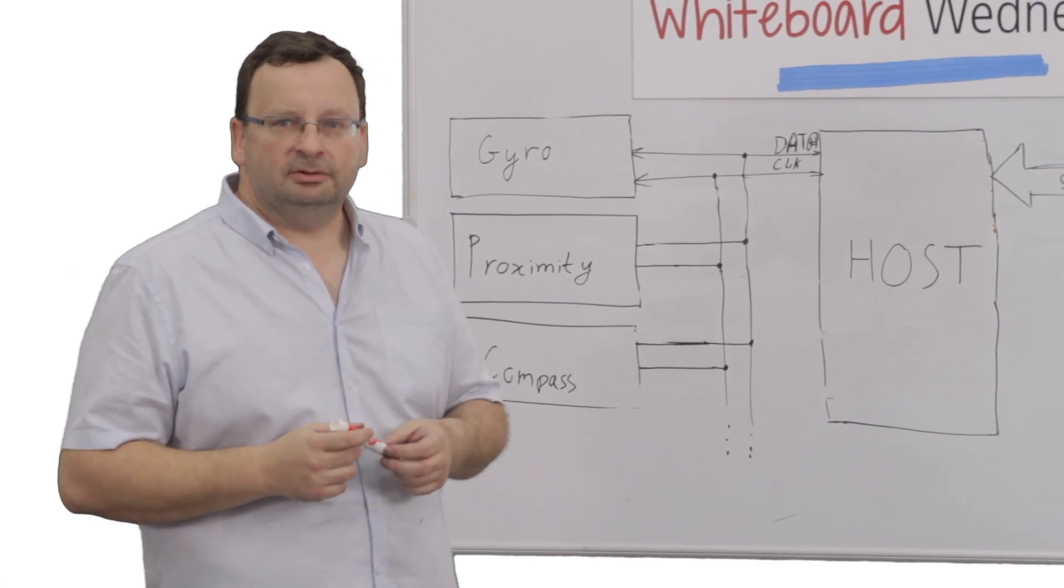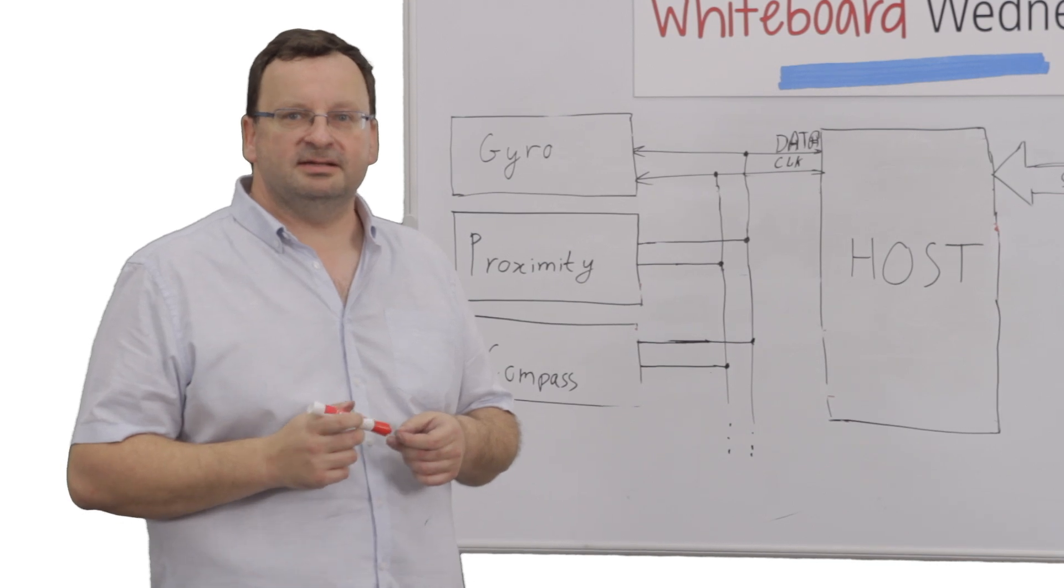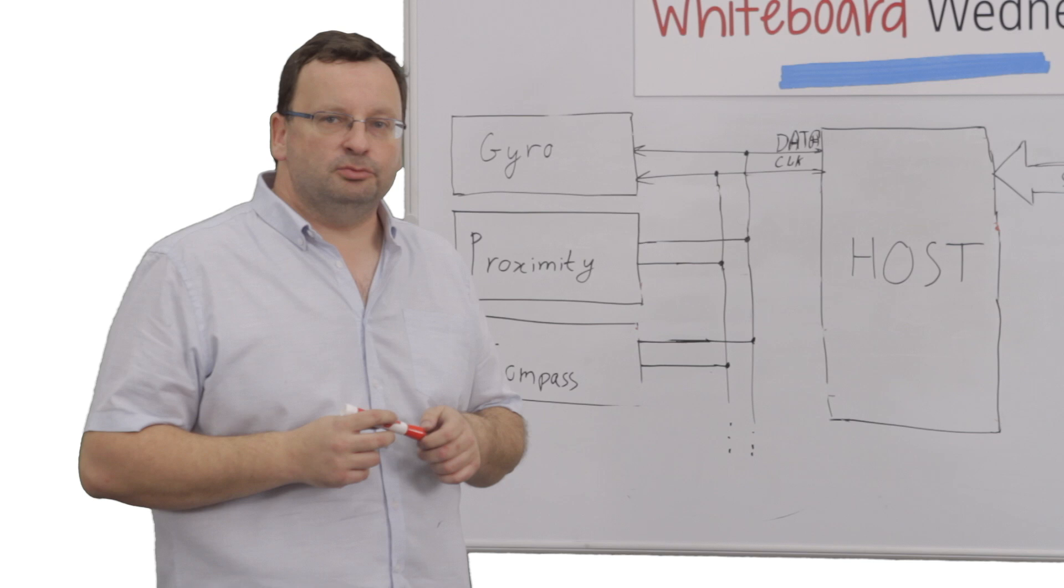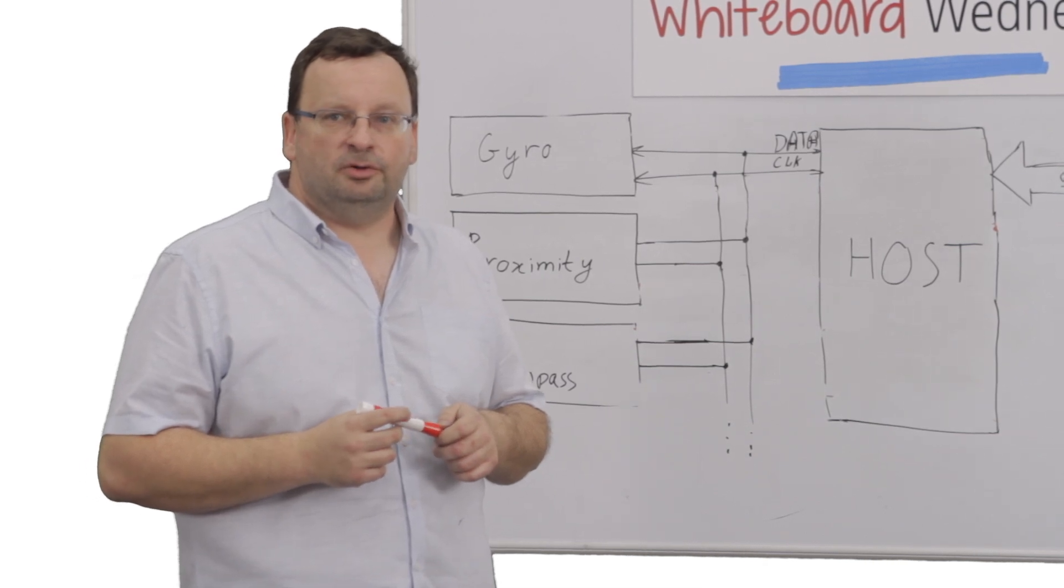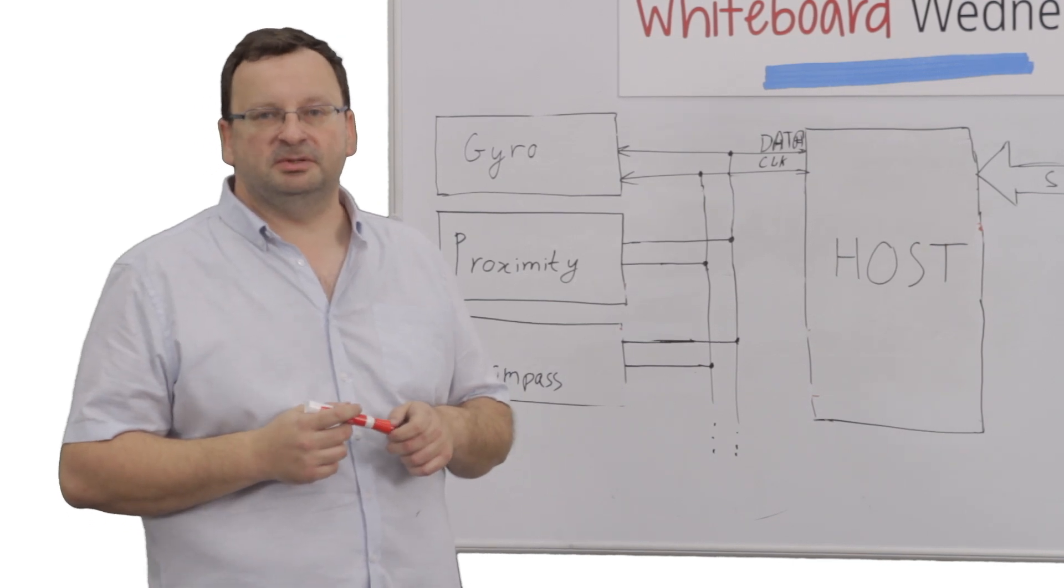The idea behind I3C protocol is to create a new standardized interface between hosts and sensors in mobile devices. This interface is intended to be simpler and more cost effective than the existing solution while preserving as much as possible backward compatibility.